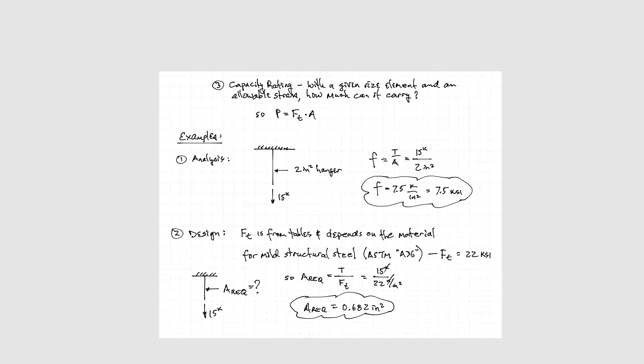We divide our load, 15 kips, by 22 kips per square inch, the allowable stress, and we get a required cross-sectional area of 0.682 square inches.